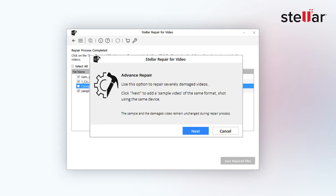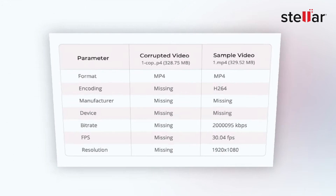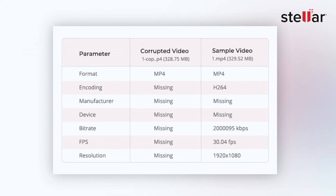The Advanced Repair feature of Stellar Repair for Video uses sample file information such as format, encoding, manufacturer, device, bitrate, fps, and resolution to repair the severely corrupt video files.